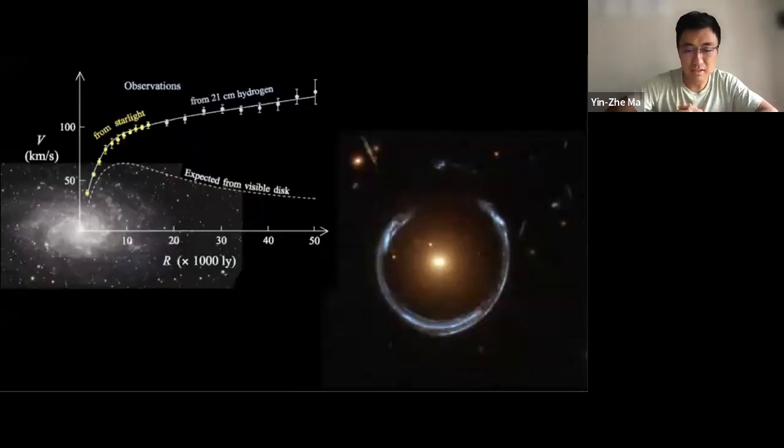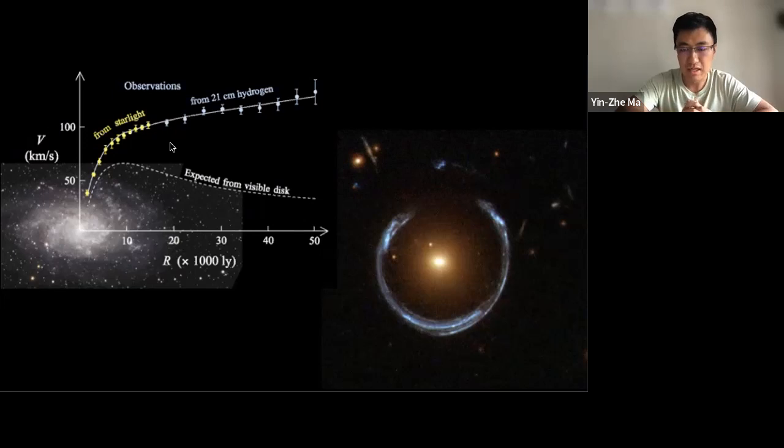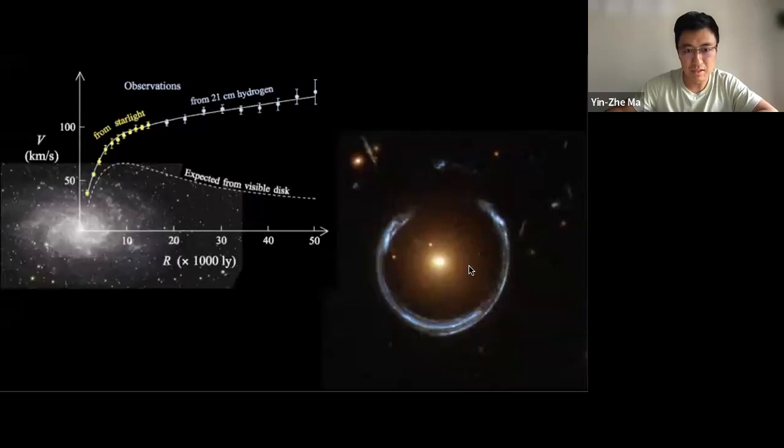We know the existence of dark matter for a long time. The upper left figure shows a rotation curve of galaxies that shows a constant circular velocity of stars at different distances from the center. This indicates there must be dark matter that provides gravity to pull the stars revolving around it. The right panel shows a beautiful arc of gravitational lensing due to the bending of light by gravity of the dark matter halo in the center.